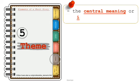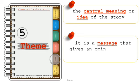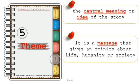The fifth element of a short story is the theme. It is the central meaning or idea of the story — what the story is all about. It is also a message that gives an opinion about life, humanity, or society. Some examples of themes include love, friendship, good versus evil, the importance of family, and crime is bad.